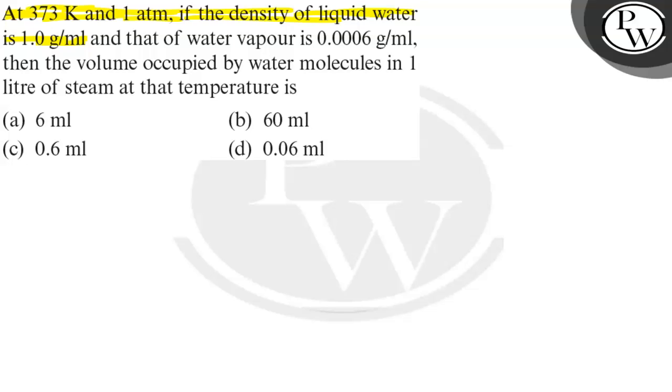density of liquid water is 1 gram at 373 Kelvin and 1 atmosphere, and that of water vapor is 0.0006 grams per milliliter. Then the volume occupied by water molecules in 1 liter of solution at that temperature is: